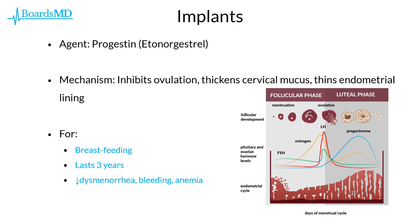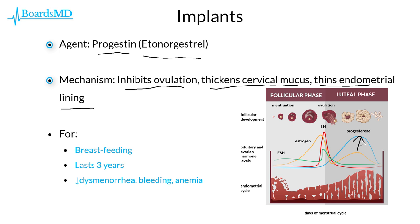When it comes to examinations, the one implant you need to be aware of is the progestin implant, which secretes etonogestrel. This implant works via a progesterone-mediated mechanism by inhibiting ovulation, thickening cervical mucus, and thinning the endometrial lining. Looking back to basic sciences regarding the menstrual cycle, during the luteal phase progesterone levels reach their peak, and the downstream effect is shedding of the endometrial lining during the menstrual period. This thinning of the endometrial lining, thickening of cervical mucus, and inhibition of ovulation is what allows these progestin-based implants to take effect.